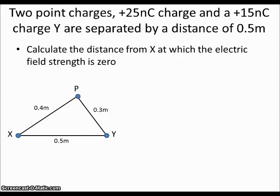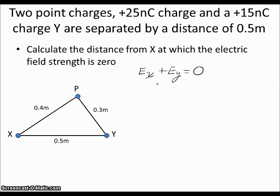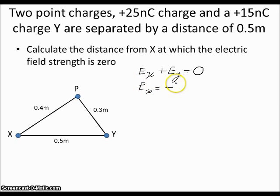Now let's try a harder problem. This asks us to calculate the distance from X at which the electric field strength is zero. The setup is the same charges in the same places. We need to find a point where the electric field strength of X added to that of Y equals zero — meaning a charge placed there wouldn't be pulled in either direction. This means we're looking for where E_X equals and is opposite to E_Y.